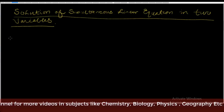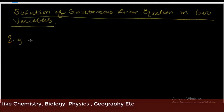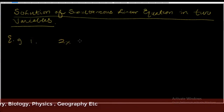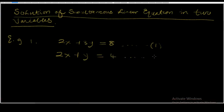Take for example equations of this form. Example 1: 2x plus 3y is equal to 8 — this is equation 1 — and 2x plus y is equal to 4 — this is equation 2. In these equations, we're going to solve for x and y. The method we're going to use here is called the elimination method.